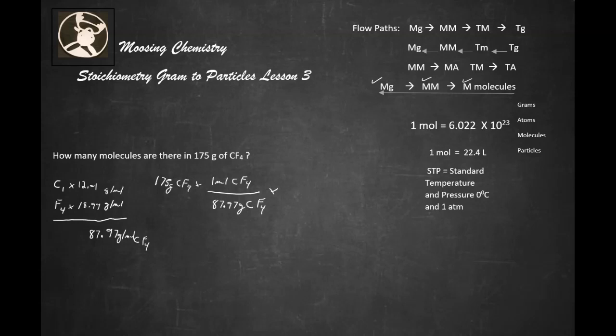Then we want to convert this into molecules. We're going to put one mole CF4 on the bottom. This time, we're going to use Avogadro's number. Remember, that number can convert with grams, atoms, molecules, particles, ion pairs, whatever. A mole of anything is 6.022 times 10 to the 23rd of that item.